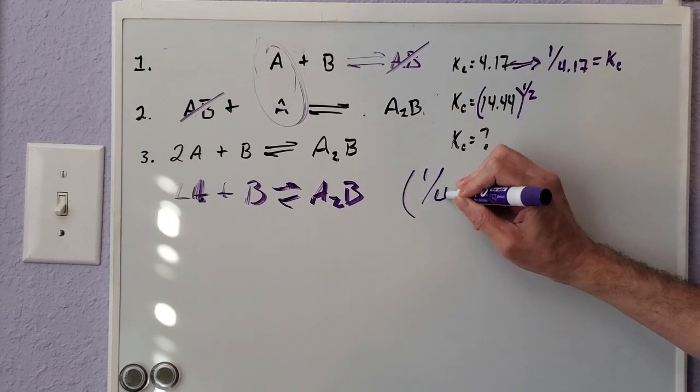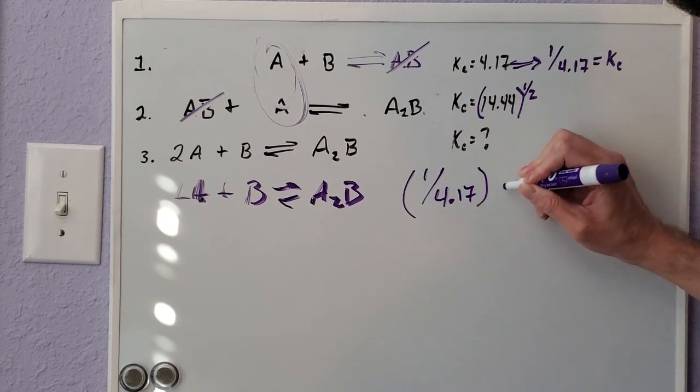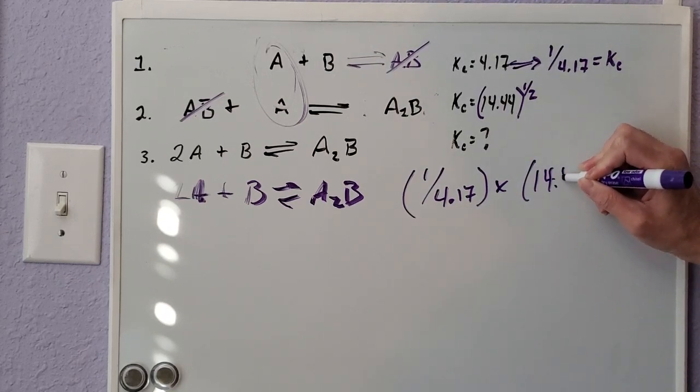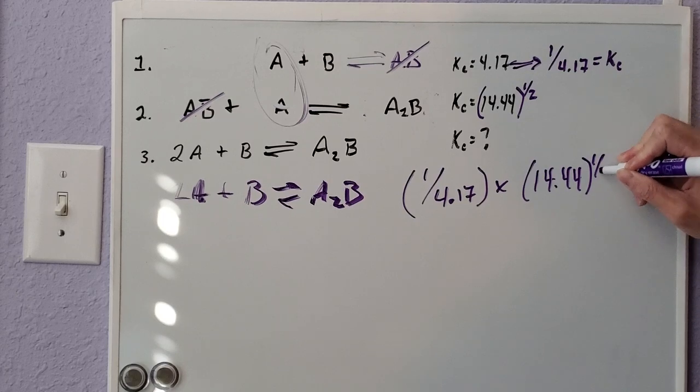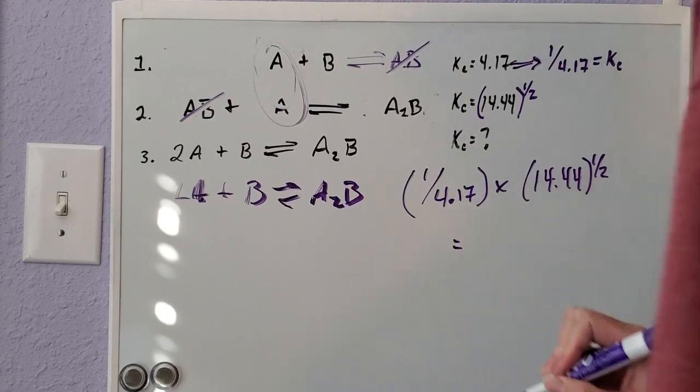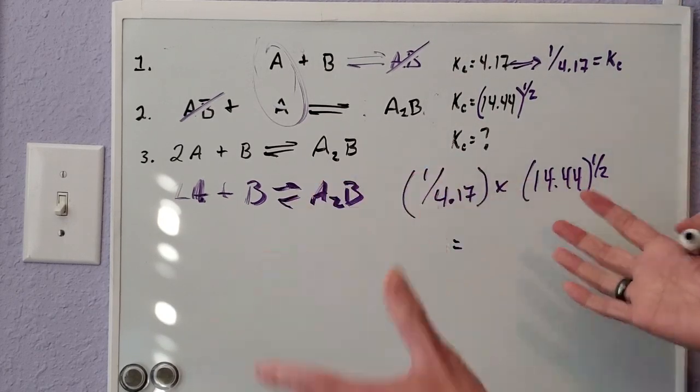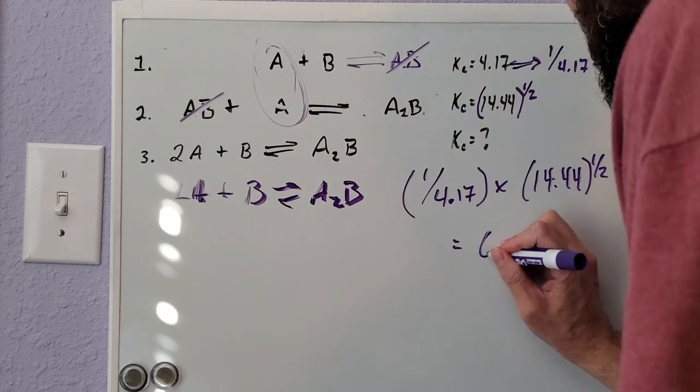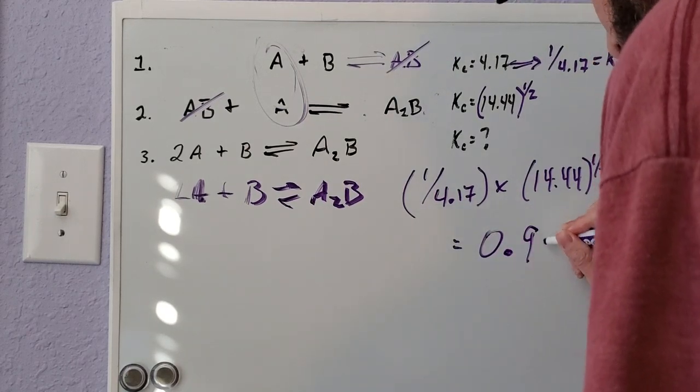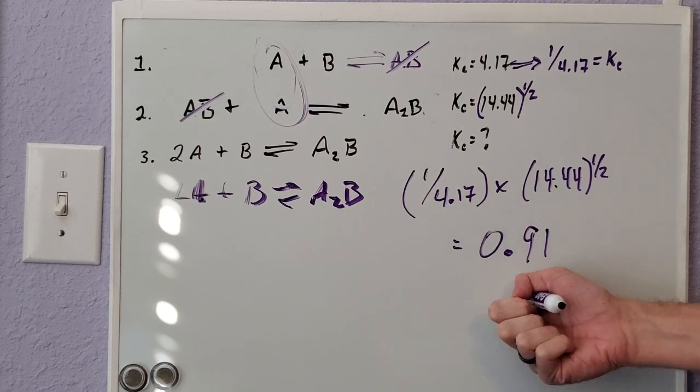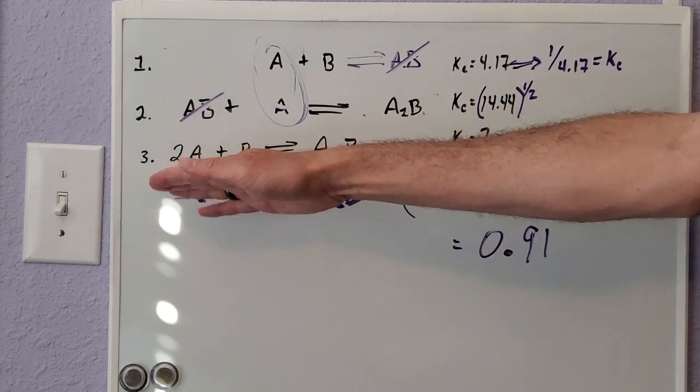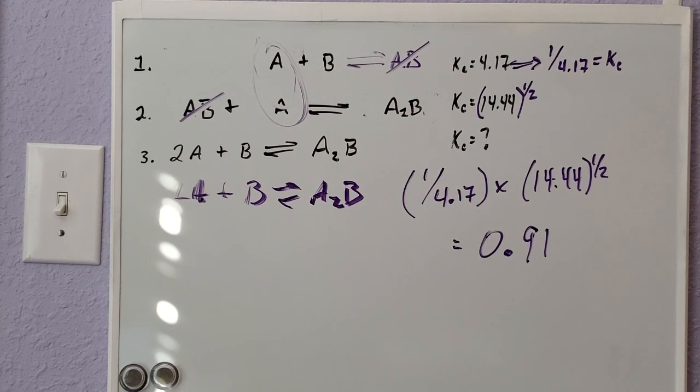Without working out too much here, we have our 1 over 4.17 times our 14.44 raised to a power of half. So when you plug this into your calculator, if you want to simplify beforehand go for it, but if you plug into your calculator I end up getting a value of 0.91. So 0.91 is the equilibrium constant of your third value here, of that 2A + B gives you A2B.